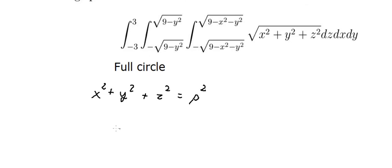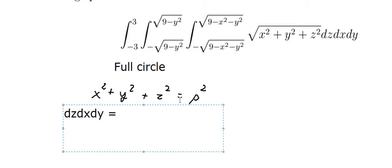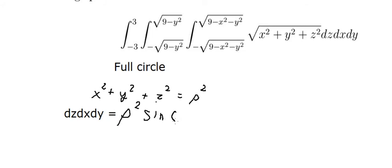Next, dz dx dy, we need to change for rho square sine phi. And we will change to d phi, d rho, d theta.